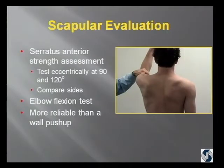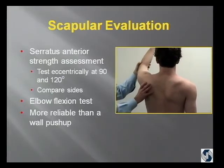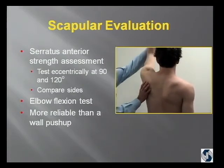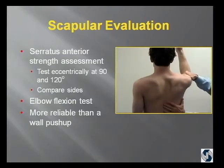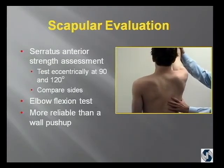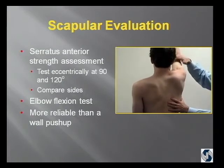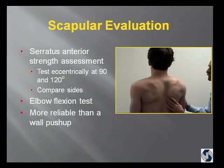I also test serratus anterior — but I don't do a wall push-up. I test it eccentrically. The left side is asymptomatic. I test at 90 and 120 degrees — usually I just go to 120 to see what he's got there. You can see how much he wings. When I put him at 120 or 110 degrees, he just starts to drift down before I even apply force. Clearly that's a serratus anterior problem. In some physical therapy literature it's referred to as the elbow flexion test when done at 90 degrees.